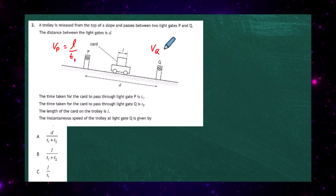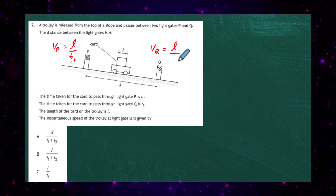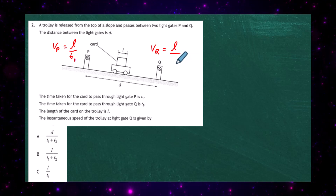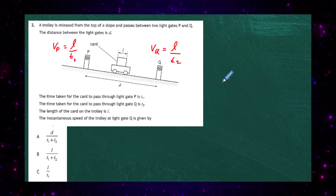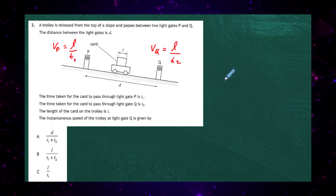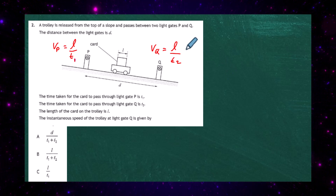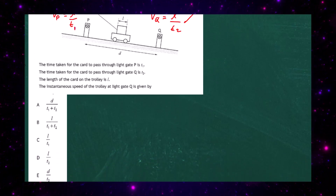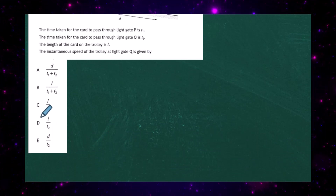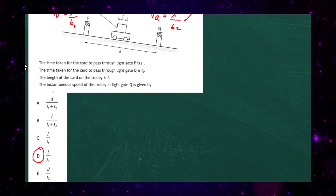At gate Q, the instantaneous velocity is the same idea: the length of the card divided by the time it took to pass through that light gate, which is t2. So the instantaneous speed of the trolley at light gate Q is l divided by t2. The correct response for question two is D.